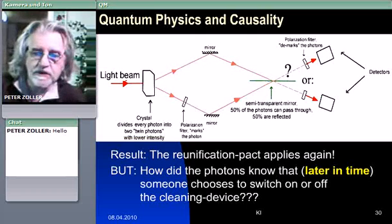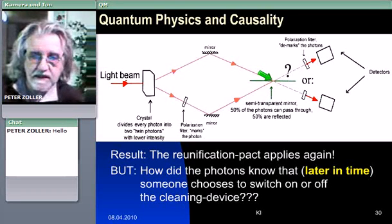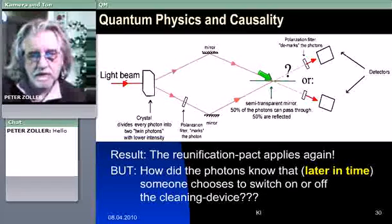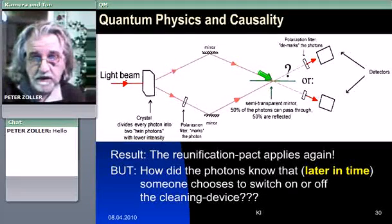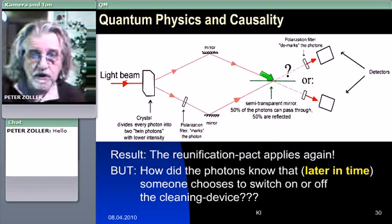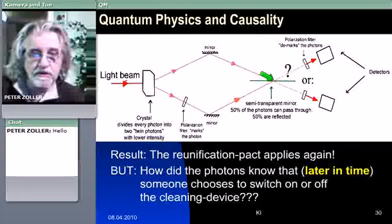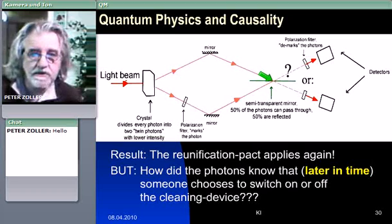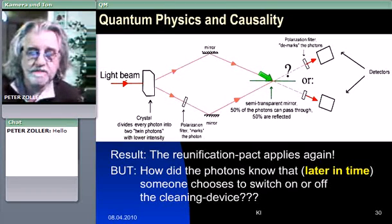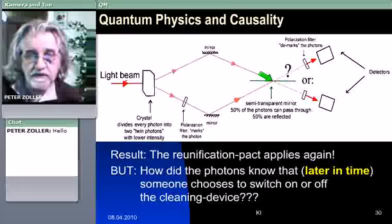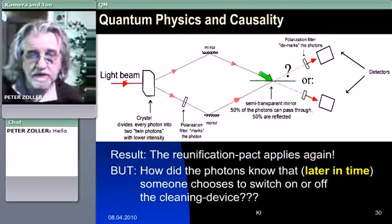How did the photons know when they pass here, the semi-transparent mirror, that later in time, when they are on their way somewhere to the detector, is switching on or not this cleaning device? Normally, they couldn't know, because it's your free choice, your free will to do so, to switch on and off these devices. So the question, very simply, is: how could they know? How could they know if you switch on or off the cleaning device?